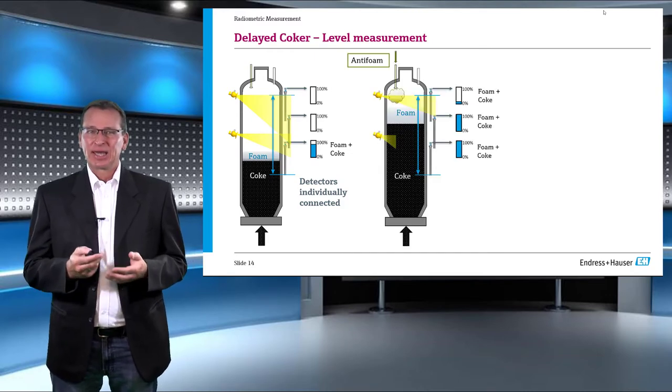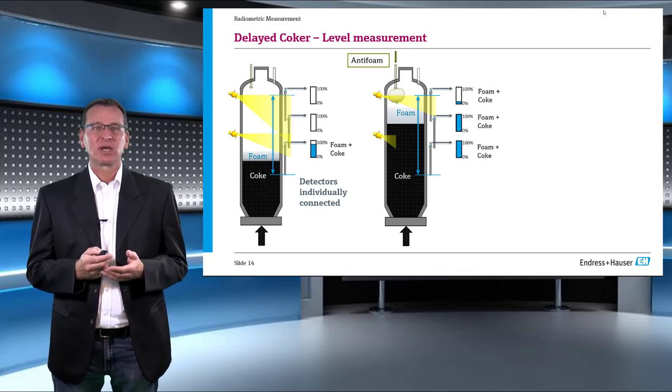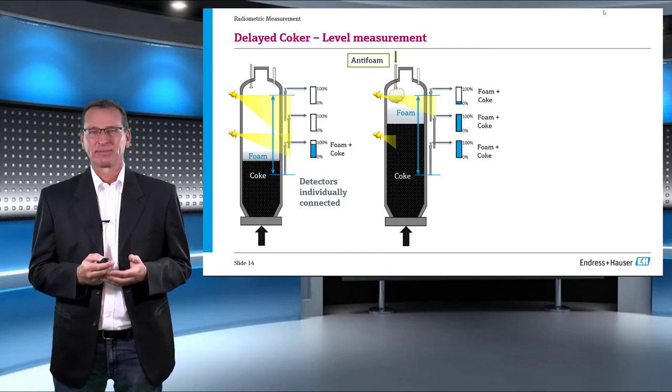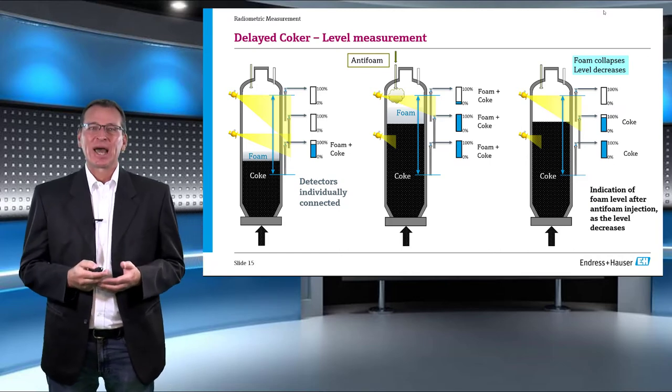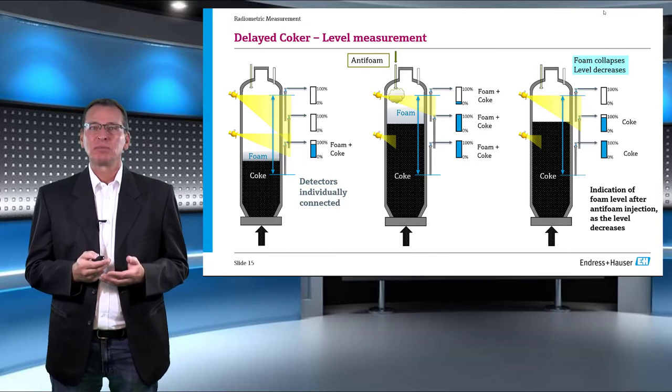In the second case, we see the foam and coke level rise to 20% of top detector, or in other words, level reaches the designated set point. This is the stage when anti-foam injection starts, leading to collapse and level fall in output in topmost and middle detector.